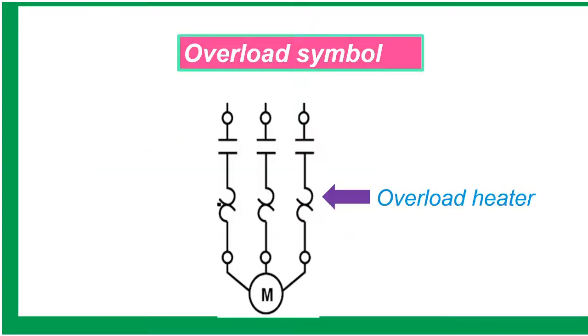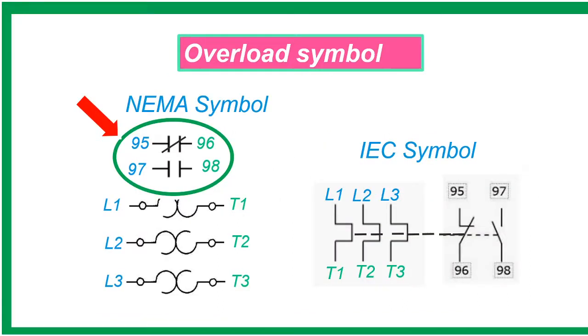The overload heater elements are connected in series with a contactor to protect the motor. An overload relay also includes one or more normally open and normally closed contacts. These contacts are connected to pilot buzzer or alarm light for indication to warn the operator or maintenance.